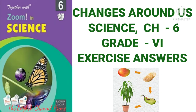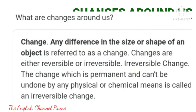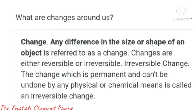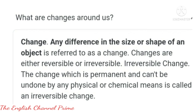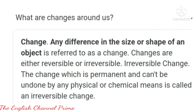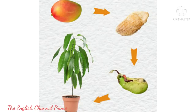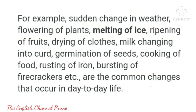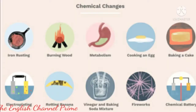Good morning students. Welcome back to the English Channel Prime. In the last class, we learnt lesson 6 of science: Changes Around Us. In this chapter, we understood that changes are happening all around us, they have some reason for which they happen, can be categorized into different types, one single change can fall into more than one category, and we studied the effect of heat on these changes. So in this class, let's start with the exercises.